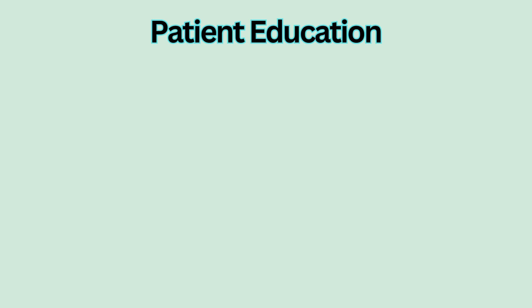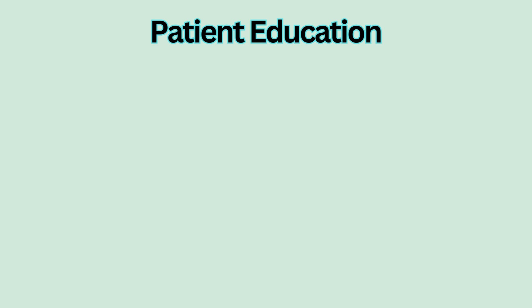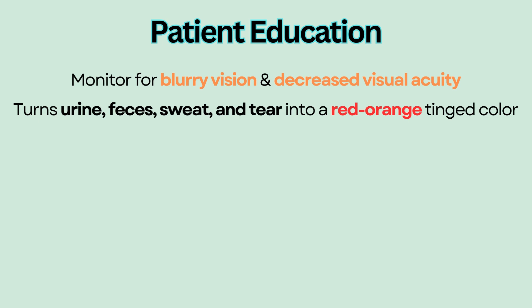Other side effects include blurry vision and decreased visual acuity. Rifampin also turns body fluids such as urine, feces, sweat, and tears into a red-orange tinged color.